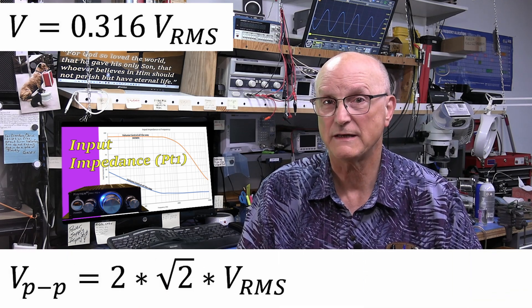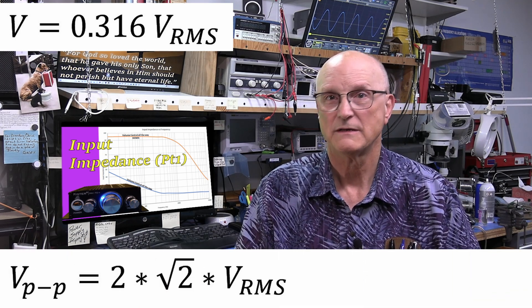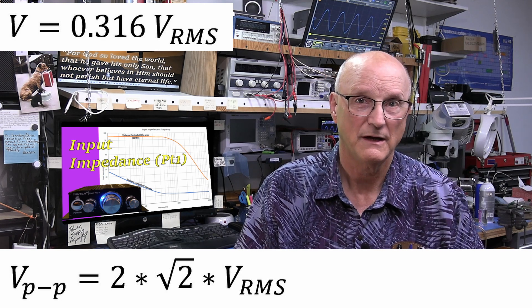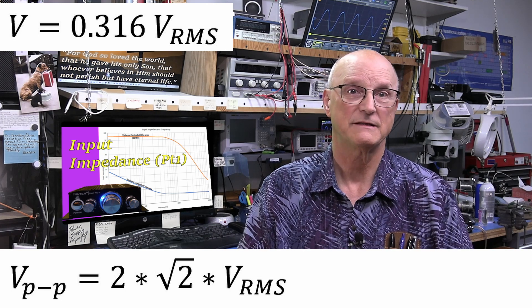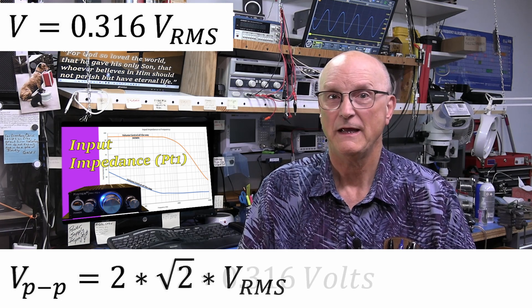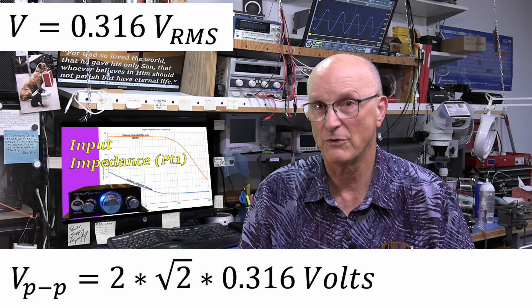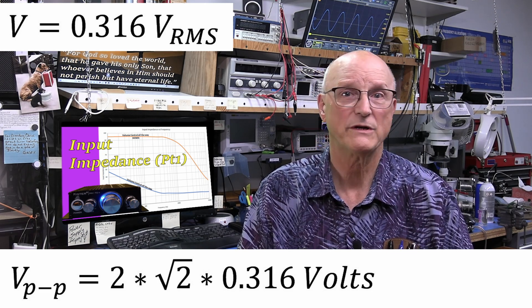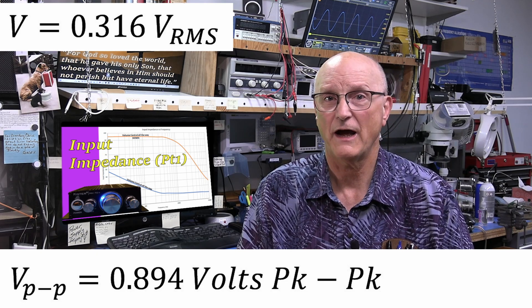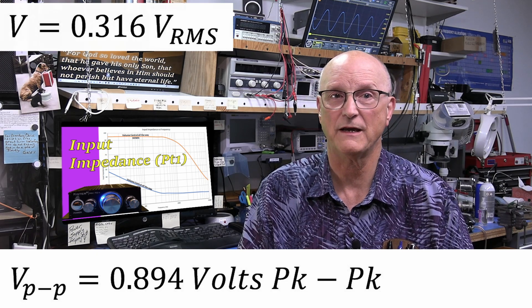So volts peak to peak is equal to 2 times the square root of 2 times the volts in RMS. Thus the test voltage that we need is 2 times the square root of 2 times 0.316 volts, which gives us 0.894 volts peak to peak.